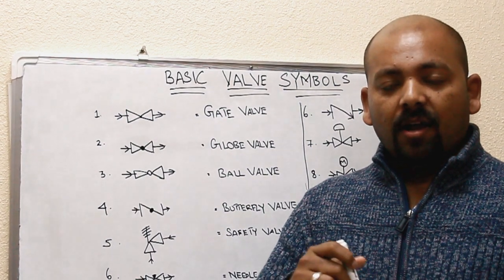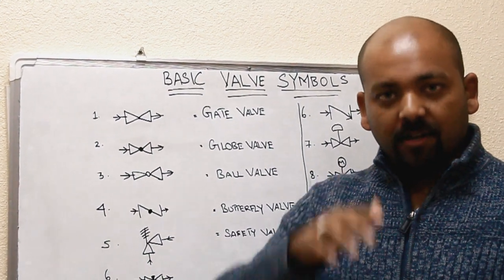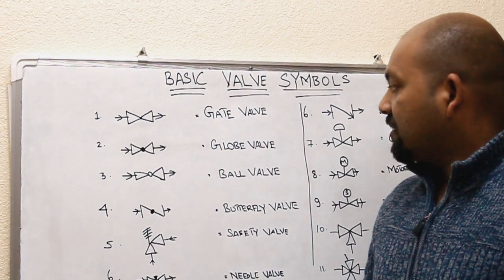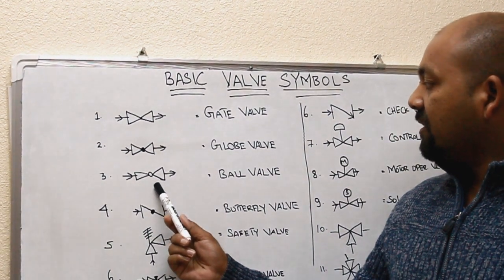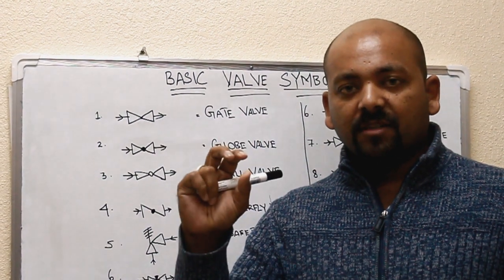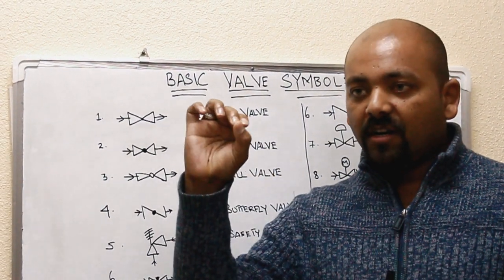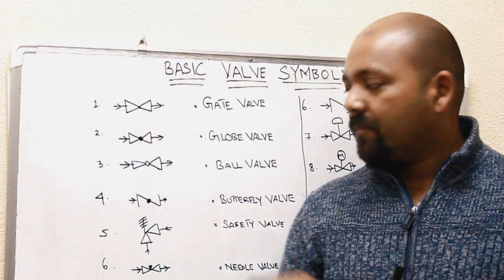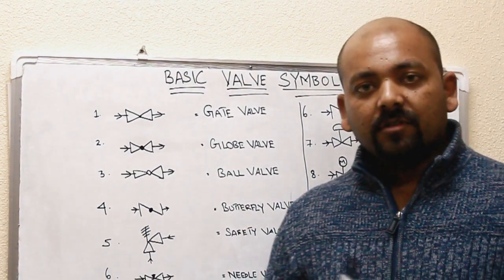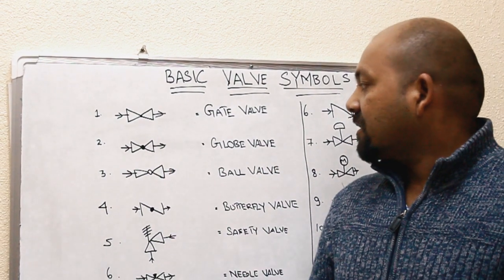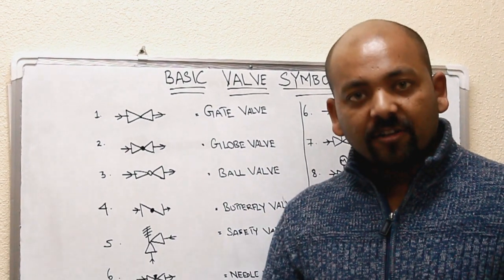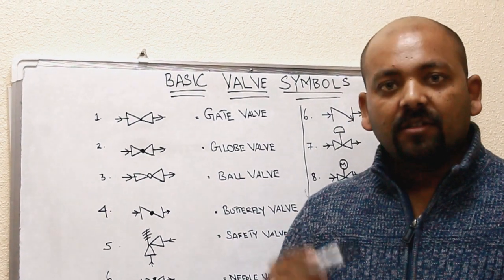The third one is the ball valve. It is controlled with a ball with some specific bore. It will turn like this with the handle on the top. And here also the same functions like the globe valve: it will start, control or regulate the flow, and close the line.